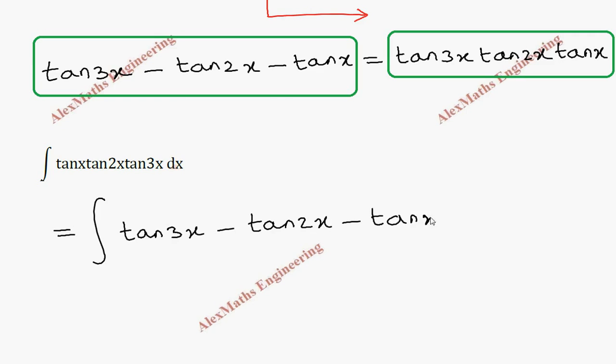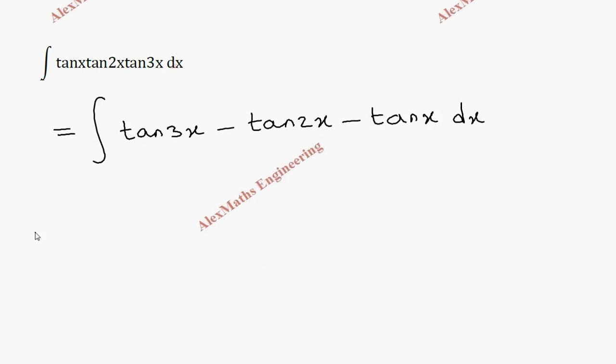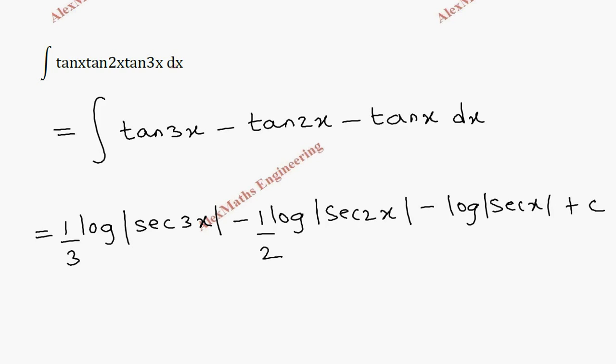Now integration of tan is log secant. So the answer is log secant(3x) by 3 minus log secant(2x) by 2 minus log secant(x) plus c.